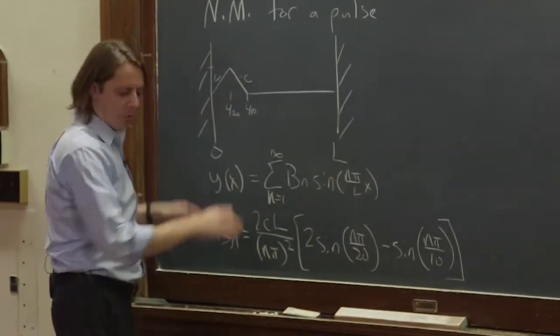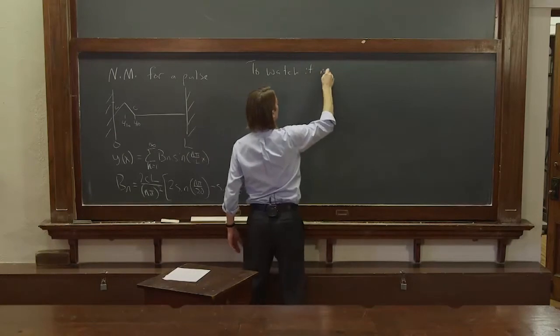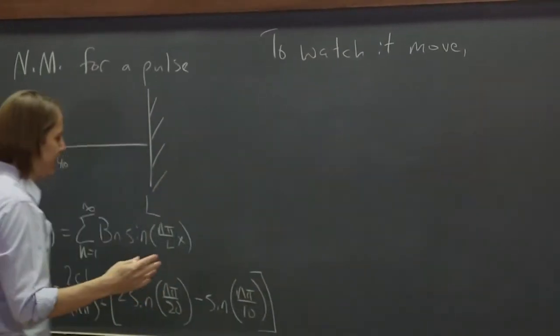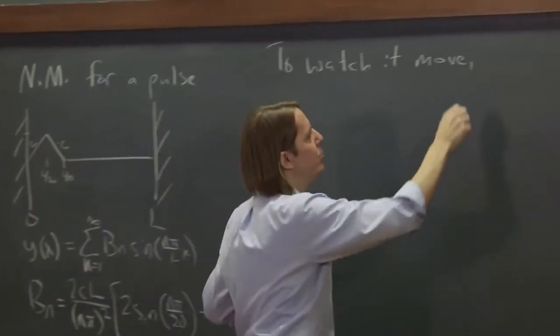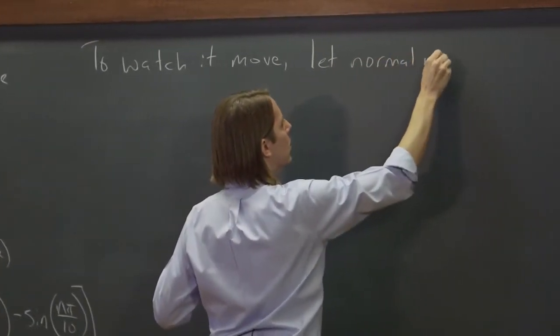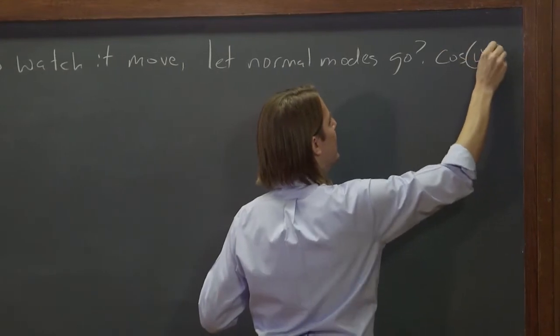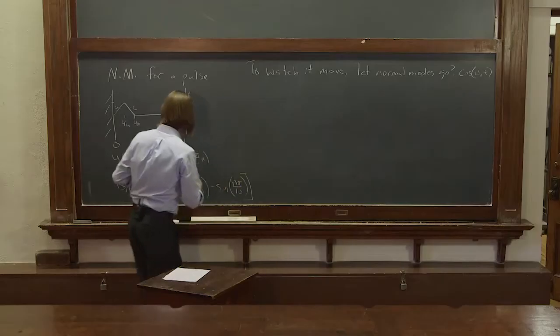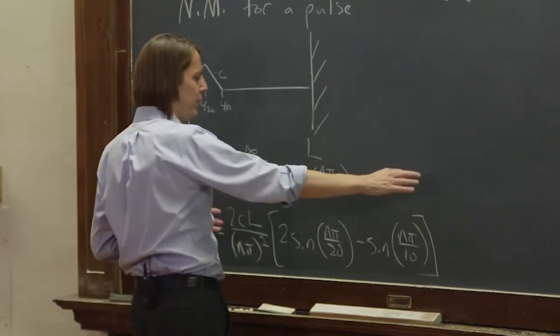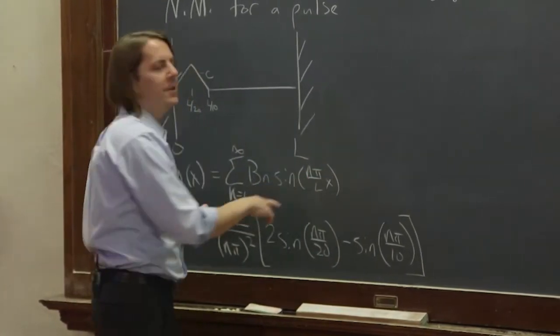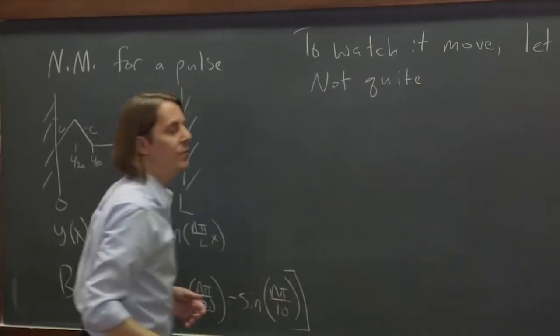So we want to see this pulse move. So to watch it move, what are we going to do? Well, the simple thing might be to say, well, if those are the normal modes that make the pulse, maybe just let the normal modes go. So to watch it move, do we let the normal modes go? And by go, I mean you multiply them by cosine omega n t. So if this is the function of x, we could just write cosine omega n t and then just let it evolve where omega n is the proper n pi over Lv times x. Well, not quite is the answer to that question.